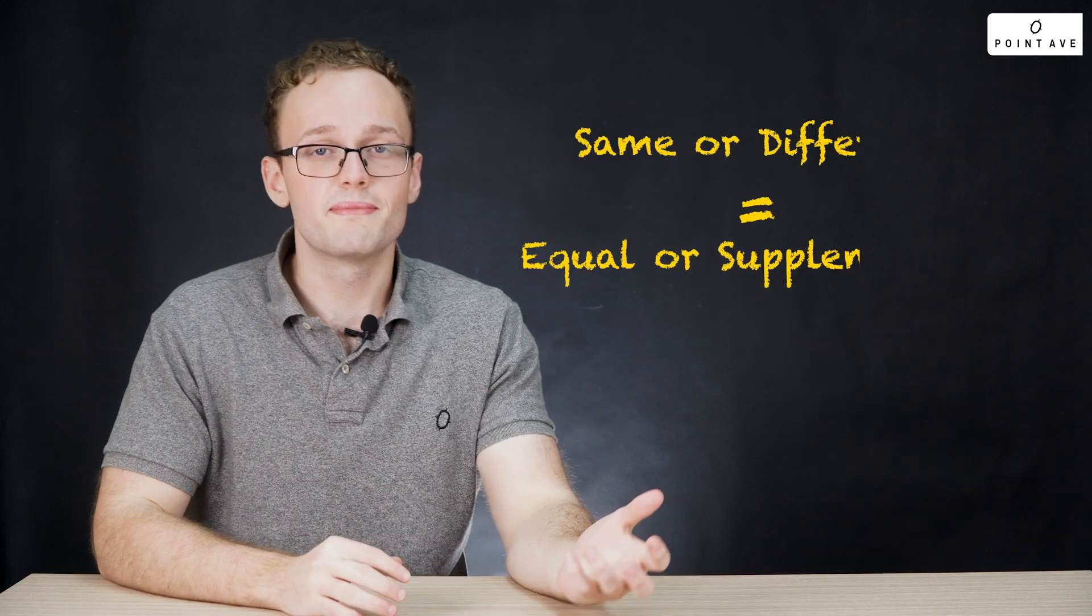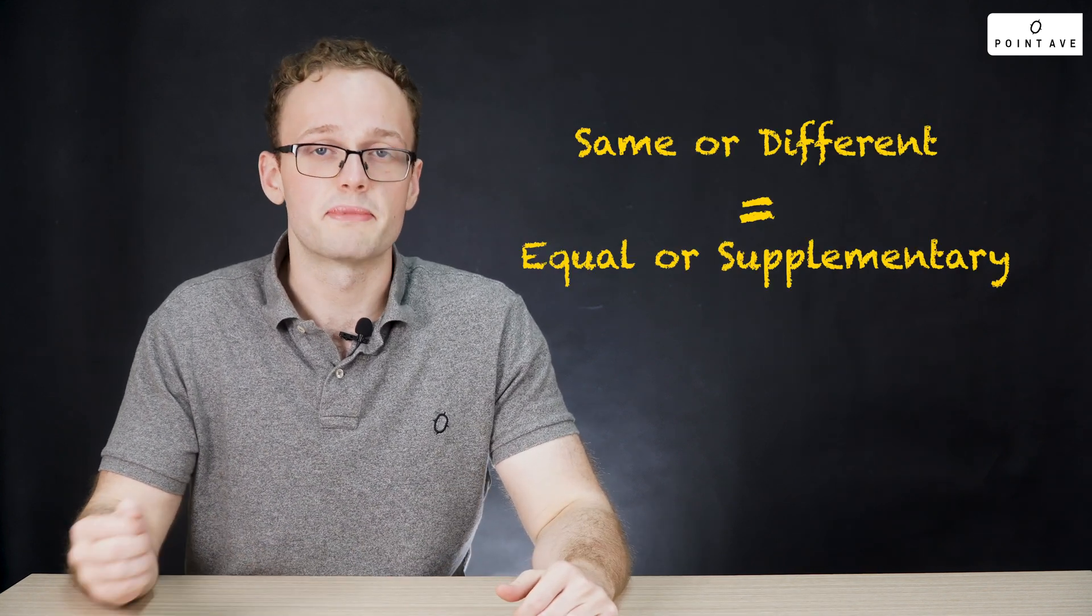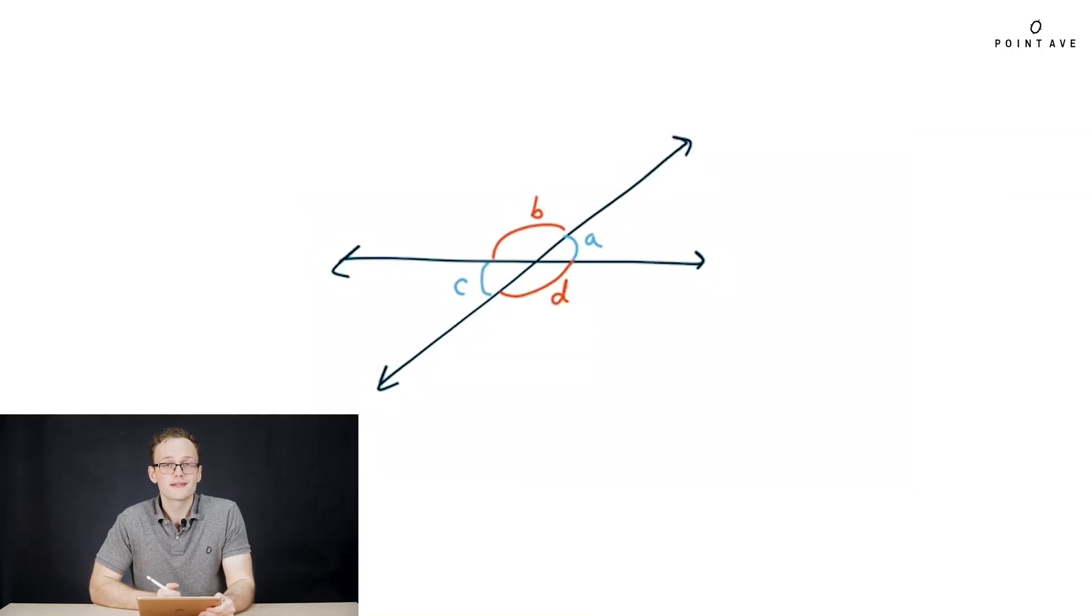Every angle related through transverse lines is either same or different. If it's the same, then it's equal. If it's different, then it is supplementary. Whenever we have two lines intersecting like we have here, it makes these four angles A, B, C, and D. So we can relate these all as either same or different.